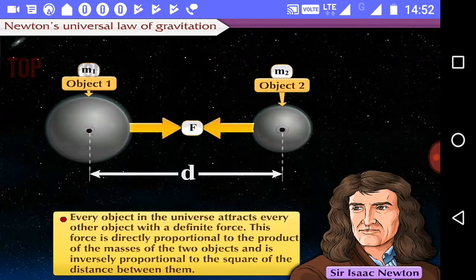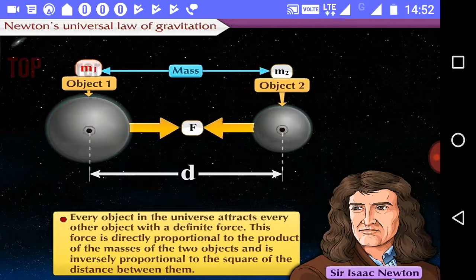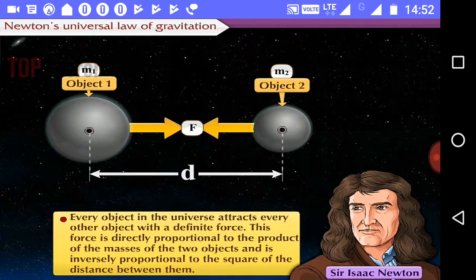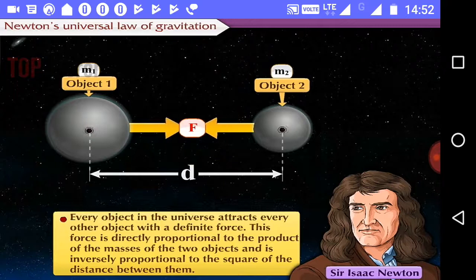Here, two objects with masses M1 and M2 are shown. The distance between these objects is D. The gravitational force of attraction between these two objects is given by